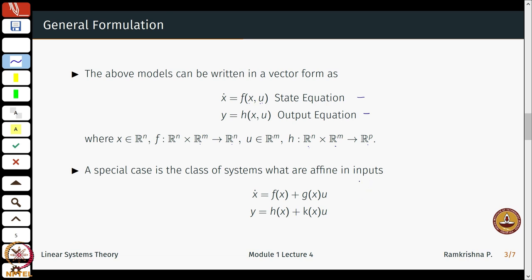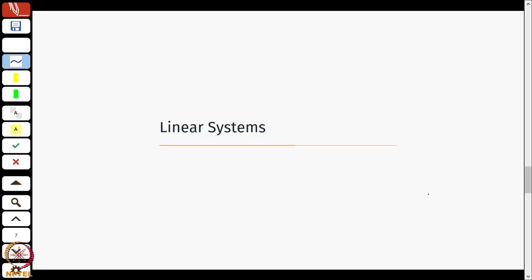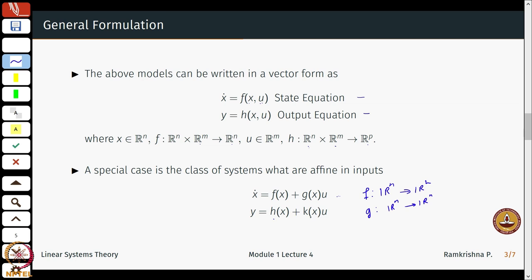A special class of systems are which are affine in inputs, as we saw in the case of the nonlinear pendulum. Here, instead of f being from R^n cross R^m to R^n, f is simply a map from R^n to R^n. Similarly, g is also from R^n to R^n. Similarly with the maps h and k. As an exercise, you can write down what the domain and the range of these maps are.